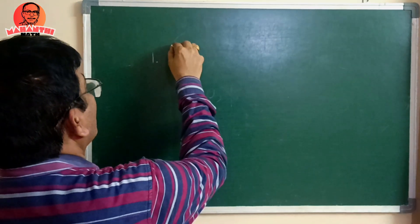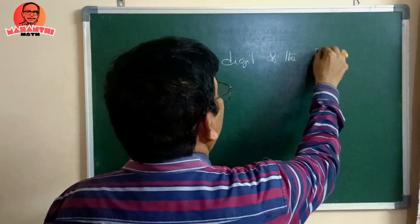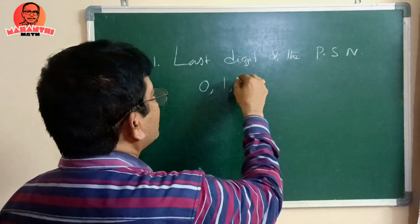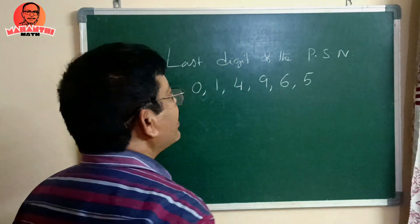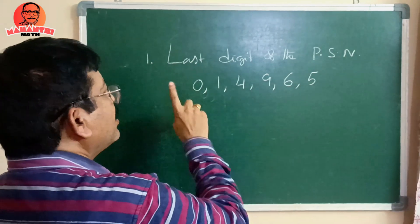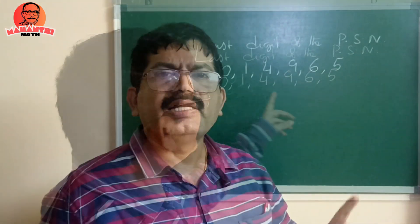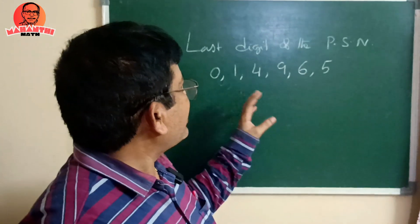Before solving the questions, I want to discuss the properties of perfect squares. The first property: the last digit of a perfect square number may be 0, 1, 4, 9, 5, 6. Specifically: 1² = 1, 2² = 4, 3² = 9, 4² ends in 6, 5² ends in 5, 6² ends in 6, 7² ends in 9, 8² ends in 4, 9² ends in 1. These are the only possible last digits. If any number ends with one of these digits, you cannot say it is a perfect square — but if a number ends with any other digit, it cannot be a perfect square.